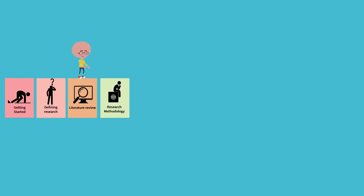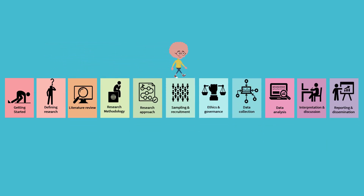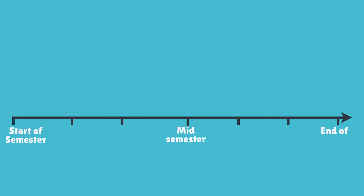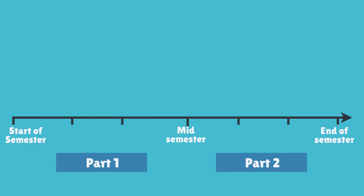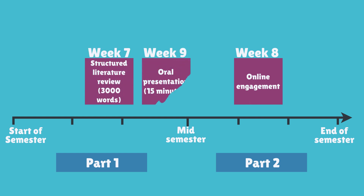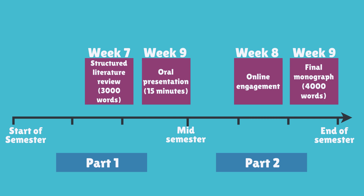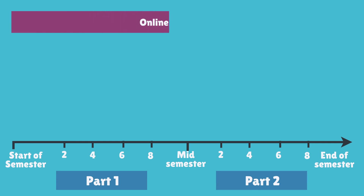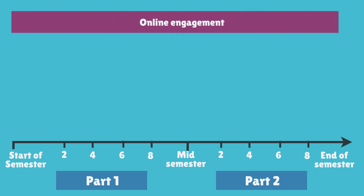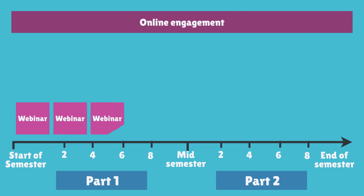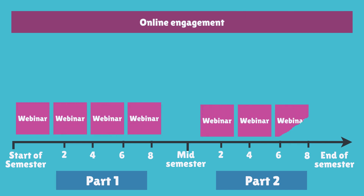The focus of the Capstone is on gaining real-world experience, so the subject takes a toolkit approach that walks you through the research process from start to finish. We expect that you will engage with these toolkit modules as necessary during the Capstone, which is why part of your final mark is based on your engagement with this learning content. The other three assessments include a structured literature review, an oral presentation, and the final research report submitted at the end of the study period. We do expect that you attend the four webinars running in alternate weeks of each term, covering different elements of the research process.